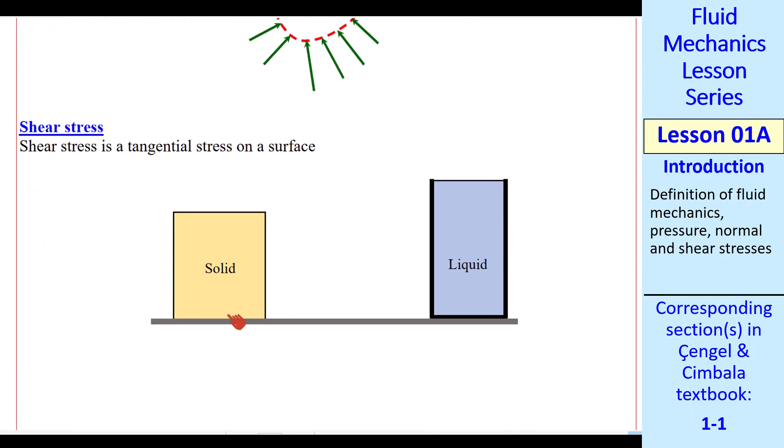What about shear stresses? Let's do the same kind of comparison between the solid and the liquid. A shear stress is a tangential stress on a surface. So if we apply a tangential stress, a shear stress, on the solid, assuming this part is anchored to the ground, it will distort somewhat. I'm exaggerating here. It will distort something like this. And as long as we keep applying that stress, it'll just sit there in this new configuration. So we say that a solid can resist a shear stress.